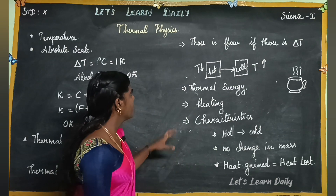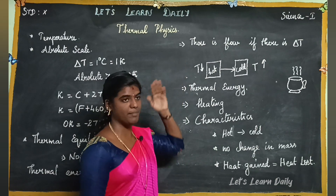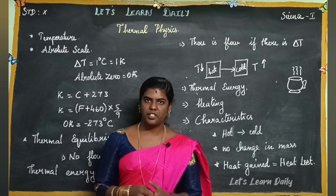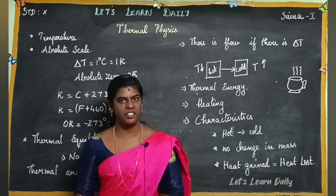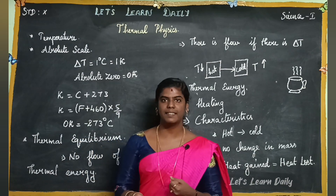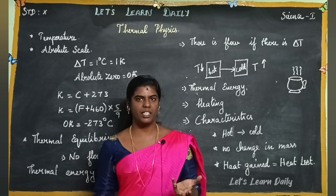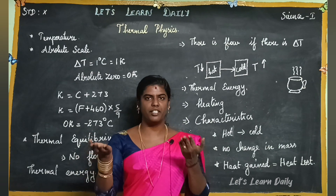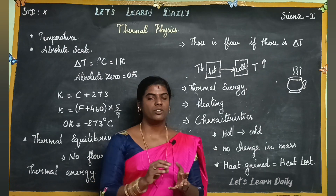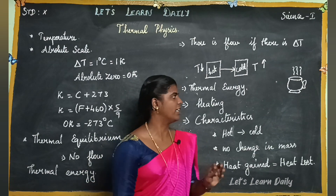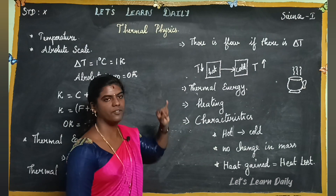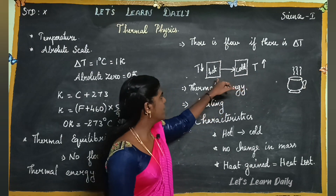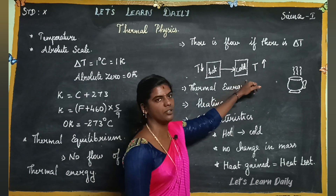If there is a temperature difference, there will be a flow of heat energy. For example, one object is 30 degrees and another is 25 degrees — there is a 5-degree variation. When this compensates, they will be equal. So, there is always heat flow when there is a temperature difference.